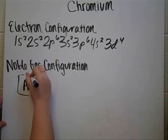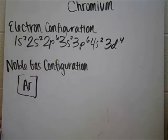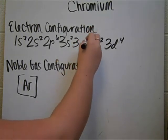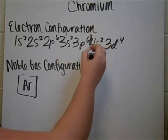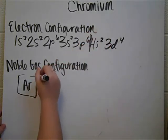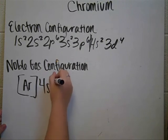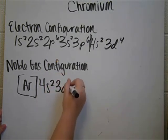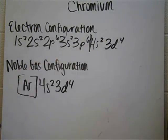And so then you'd put the symbol for argon in there. And then you just continue from argon the noble gas configuration. So this part is the part where argon comes in. So then you just put 4s2, 3d4. And that's it.